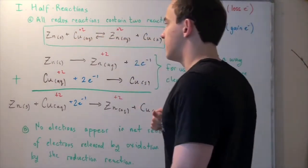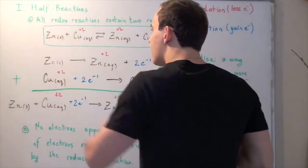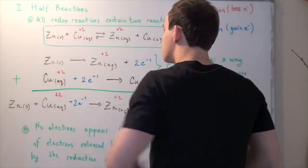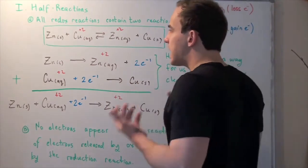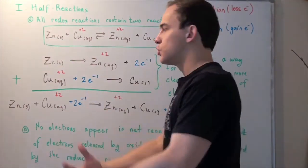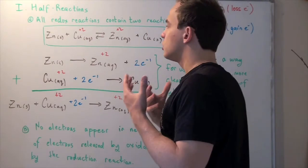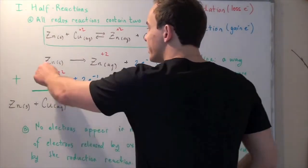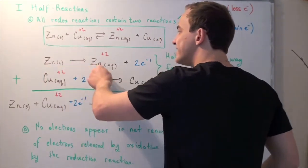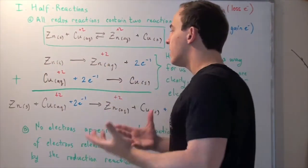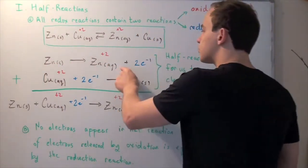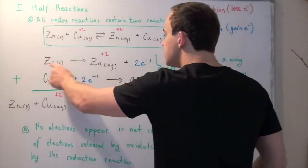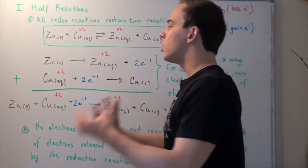So what gets oxidized? Well, our zinc solid goes from a neutral charge to a plus two charge. That means our zinc loses two electrons. So let's write the oxidation equation. Zinc solid becomes Zn²⁺ because it loses two electrons. So our oxidation reaction involves the loss of electrons.